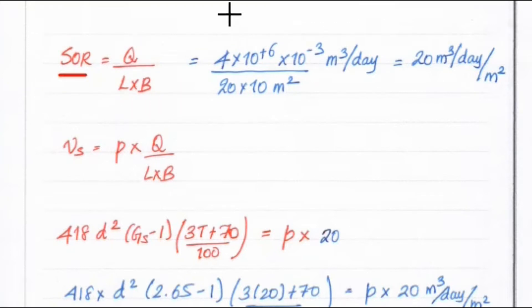Q is equal to 4 million liters per day. So 4 into 10 power 6 into 10 power minus 3 meter cube per day divided by L and B. So L is given 20 and B is given 10. Solving this we got 20 meter cube per day per meter square.